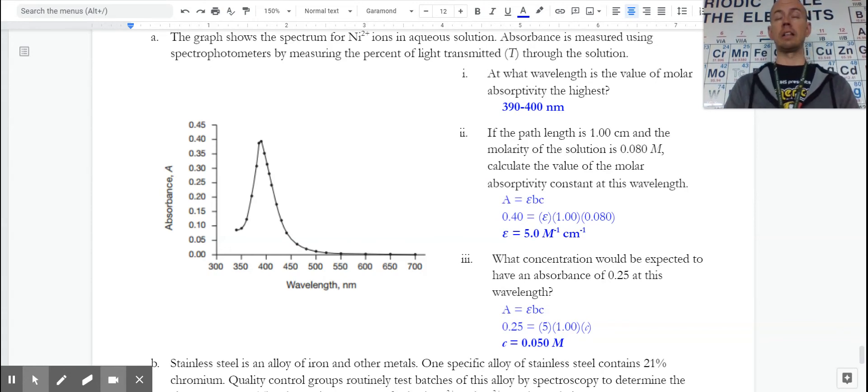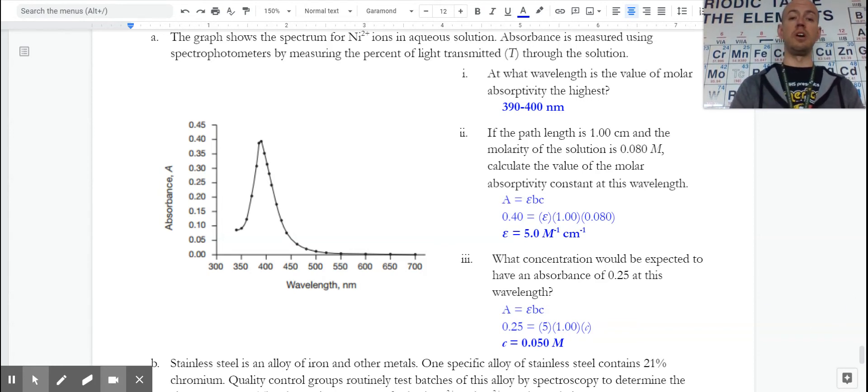If we had a calibration curve in a best fit line, our y-axis would be absorbance. But this time, our x-axis, much like you saw in the notes, would be the concentration.